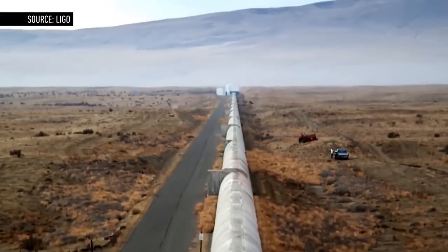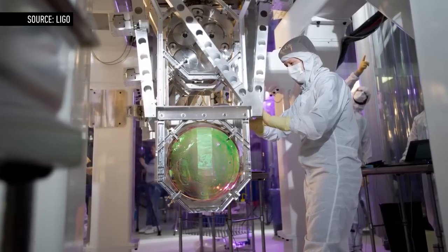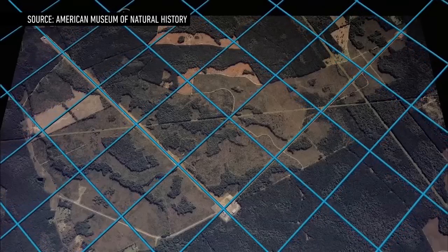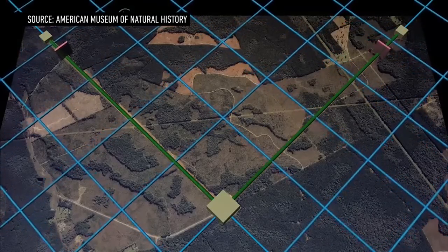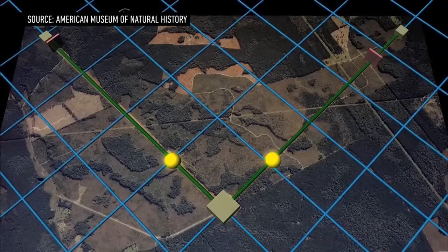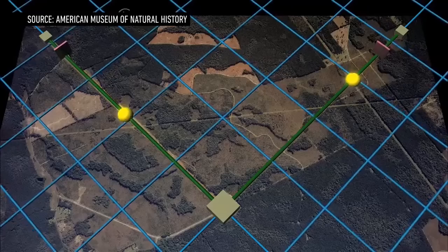At the end of each arm is a mirror. When the gravitational waves pass the mirrors, they warp spacetime, making it appear that one mirror is closer than the other. The scientists can measure this phenomenon by timing how long it takes for lasers to bounce back from each mirror.